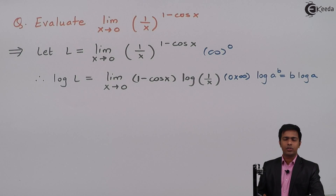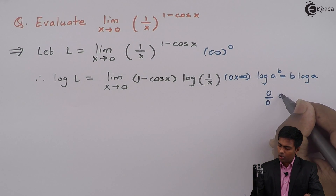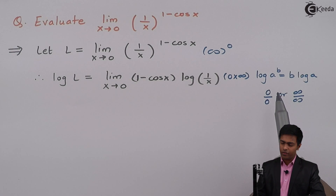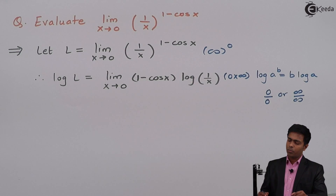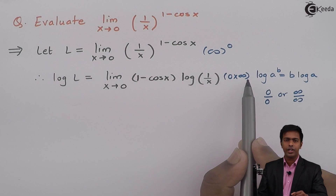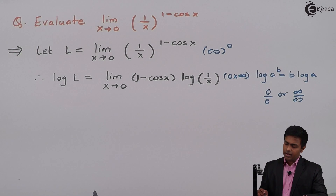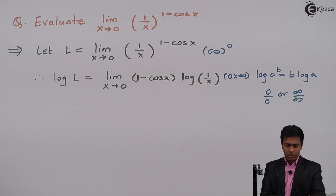To apply L'Hôpital's rule, we need the function in the form of numerator upon denominator — that is, 0/0 or ∞/∞ — so we can differentiate numerator and denominator separately. To convert from 0 times infinity to the required form, I will first substitute the formula for 1 minus cos x, which is 2·sin²(x/2), and then take it into the denominator.